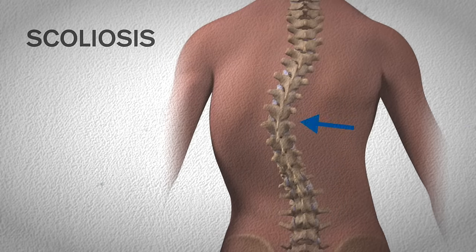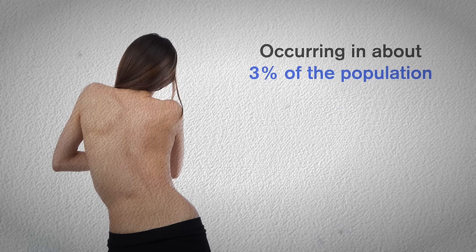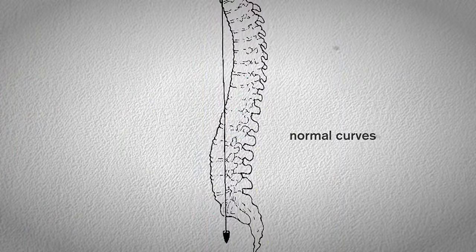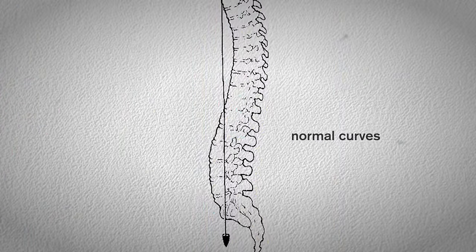In addition to lordosis and kyphosis, there's also scoliosis — which is the lateral, or sideways, curving of the spine. This is actually the most common abnormal curvature, occurring in about 3% of the population, and it's more common among females.